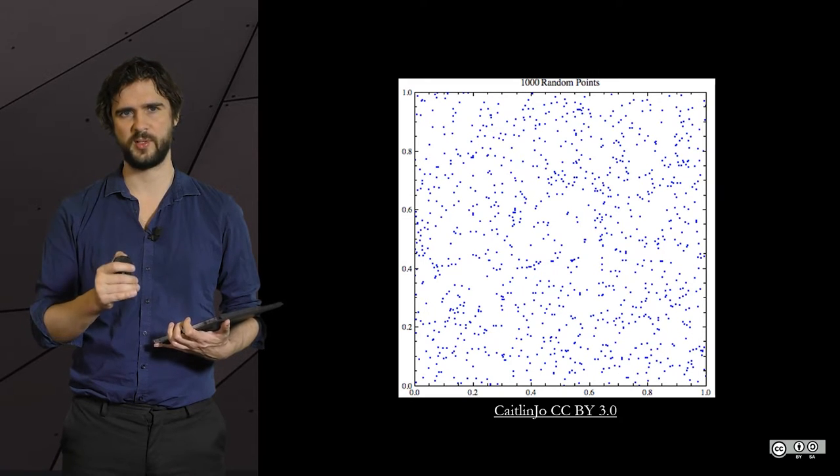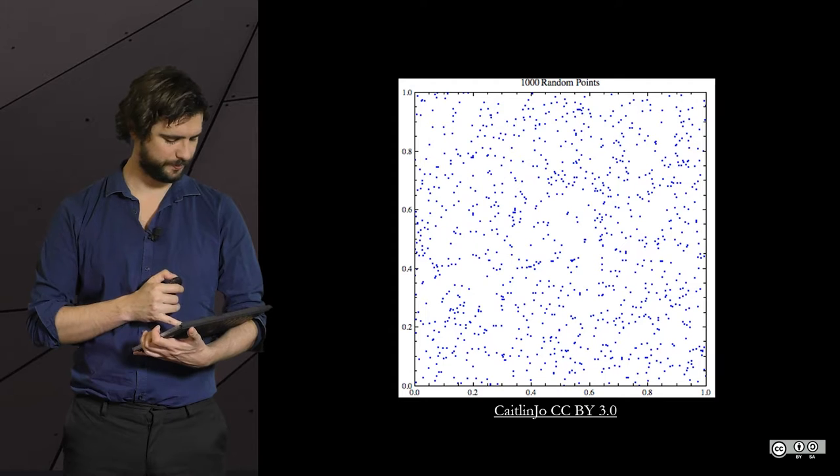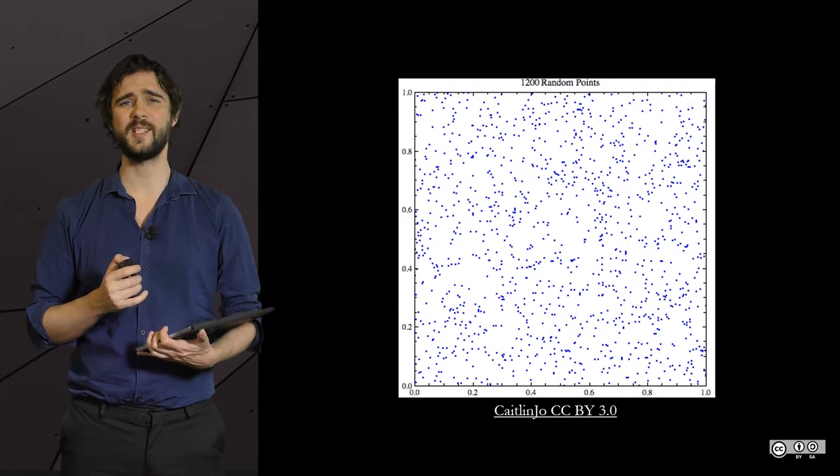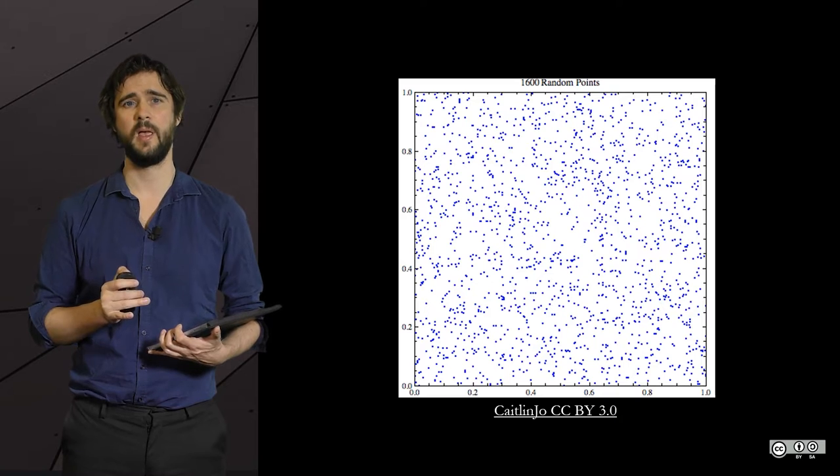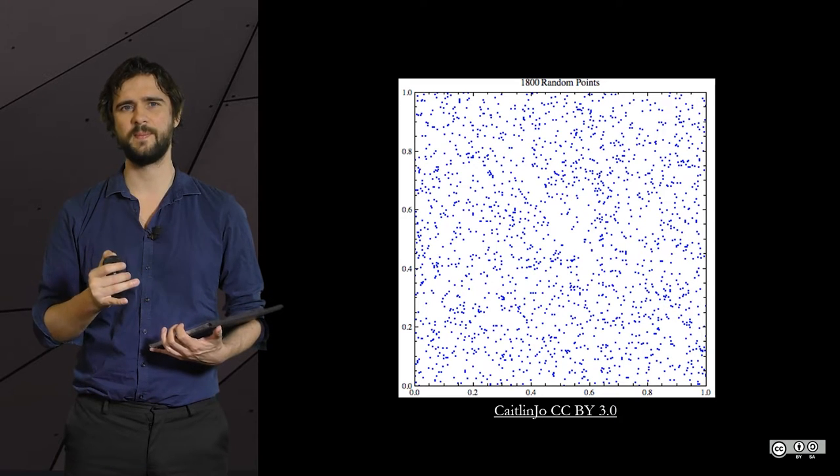We are adding points randomly on this plot. So, the next points could be added anywhere. There is no pattern whatsoever. And what appears randomly over time?